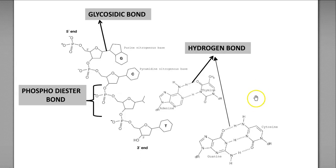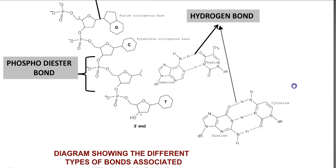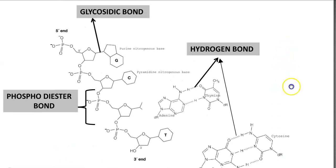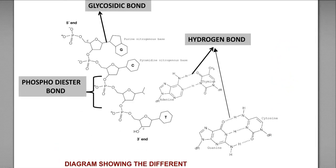For example, if adenine is present in one strand, it will base pair with thymine with the help of two hydrogen bonds. Whereas if guanine is present in one strand of the DNA, then in the opposite complementary strand it will join with cytosine with the help of three hydrogen bonds. These hydrogen bonds help in stabilizing the double helix of the DNA molecule.